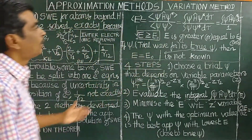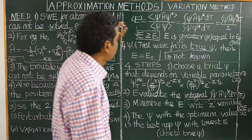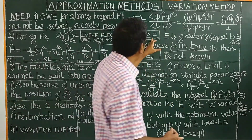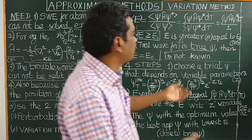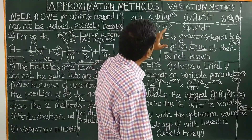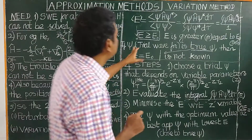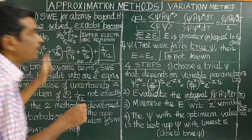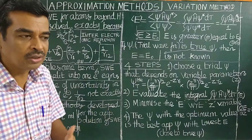According to the variation theorem, this is its mathematical form. The energy obtained is always greater than or equal to E₀ — the true ground state energy of helium atom or multi-electron atom. When E equals E₀, the trial wave function equals the true wave function. The wave function for the helium atom is not known exactly, whereas the wave function for the hydrogen atom has been exactly solved.